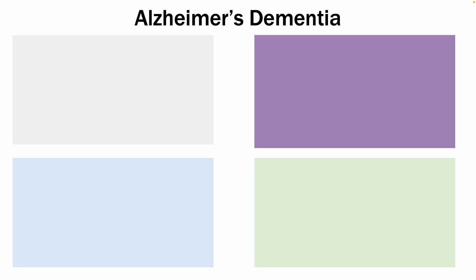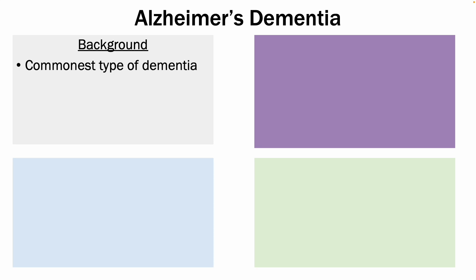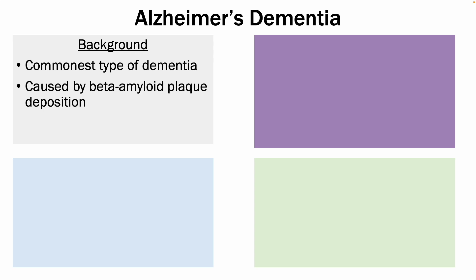Firstly, let's start with Alzheimer's dementia. It is the commonest type of dementia by far, and it is caused by beta-amyloid plaque deposition within the cortex.